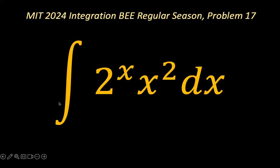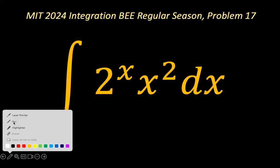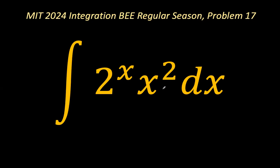Today's problem is problem 17 of the MIT 2024 Integration BEE regular season, which is the definite integral of 2 to the power x times x squared. It's an interesting problem where you have the exponent kind of flipped with the base. Before I jump into trying to solve this, I'd like to thank our subscribers.